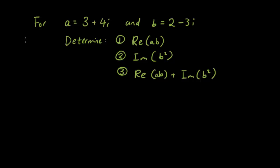Okay, so let's have a look at the answers for this. Number one says we want to know what the real component of a times b is. So the first thing we're going to do is multiply a and b together. So if a is equal to 3 plus 4i and b is equal to 2 minus 3i,